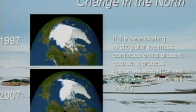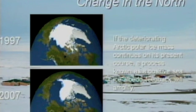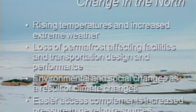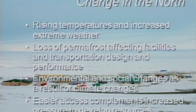This slide I found one of the most useful to give you an idea of change in the north. It shows minimum ice in September from 1997 to 2007, showing how much it's changed in that decade, and from a scientific perspective this will increase through a process known as positive sea ice albedo. Rising temperatures, increased extreme weather, loss of permafrost affecting facility design, big environmental and social changes, and because of easier water access there's increased pressure to develop resources.